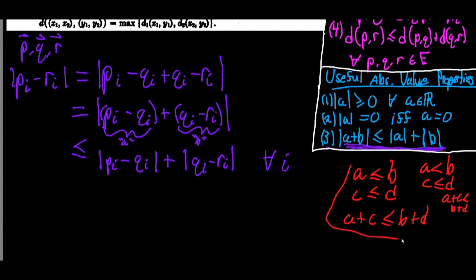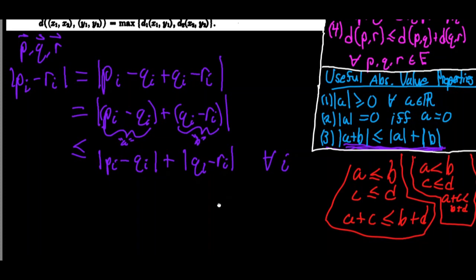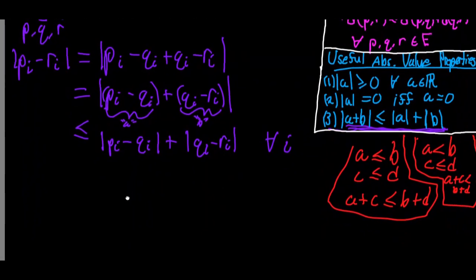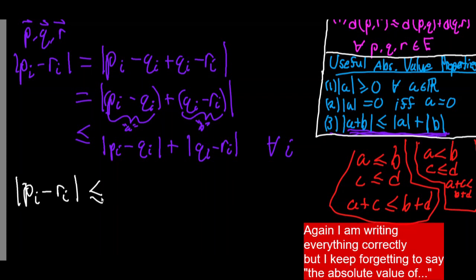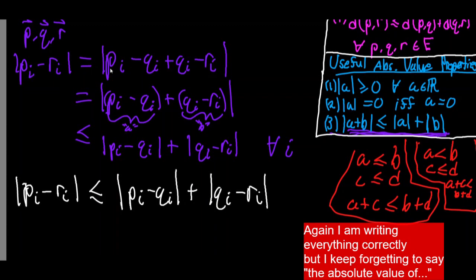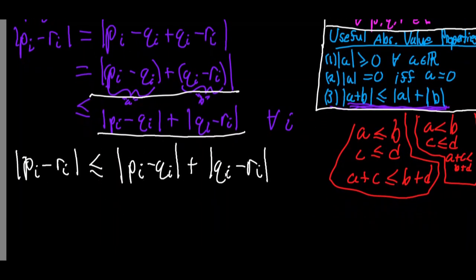Since the absolute value of pi minus ri is less than or equal to the absolute value of pi minus qi plus the absolute value of qi minus ri for all i, by extension of the summing property, the sum from i equals 1 to n of the absolute value of pi minus ri is less than or equal to the sum from i equals 1 to n of the absolute value of pi minus qi plus the absolute value of qi minus ri.